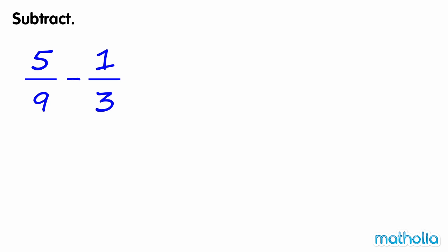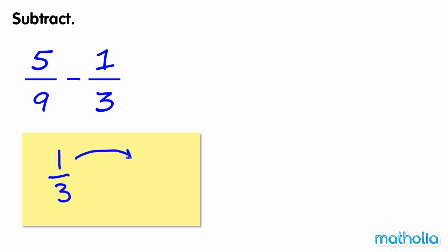Let's find an equivalent fraction of 1 third where the denominator is 9. We can do this by multiplying the numerator and the denominator of 1 third by 3 to get 3 ninths. 3 ninths is an equivalent fraction of 1 third.